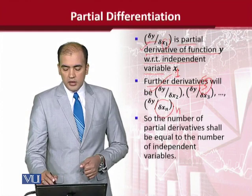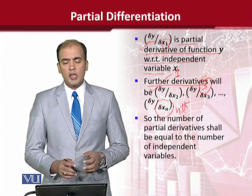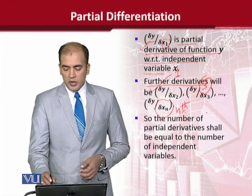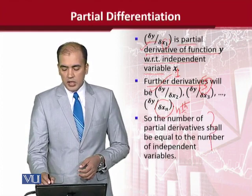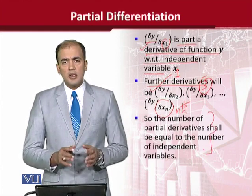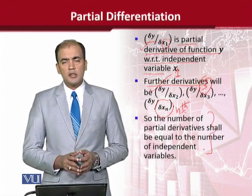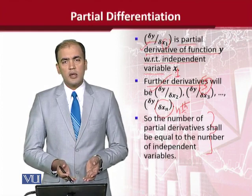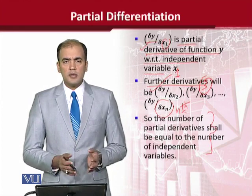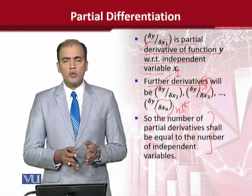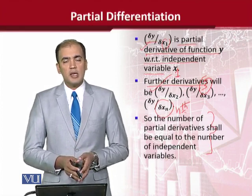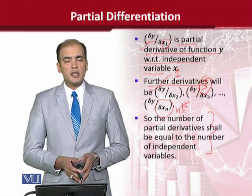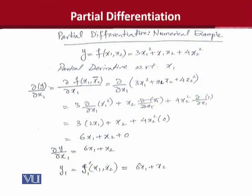So, इसका मतलब है, हमारे पास एक principle बन गया — जितने independent variables होंगे, उतने ही partial derivatives होंगे, क्योंकि हम उन्हीं independent variables के लिहाज से differentiation कर रहे होते हैं. अब इसकी हम एक numerical example भी कर लेते हैं.